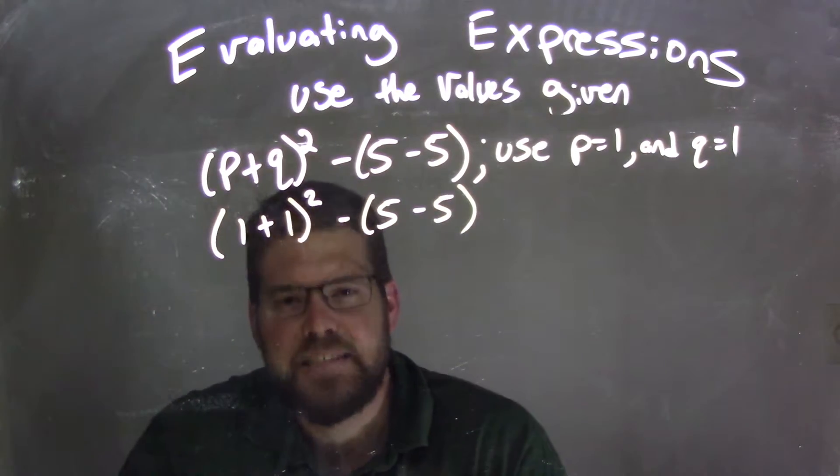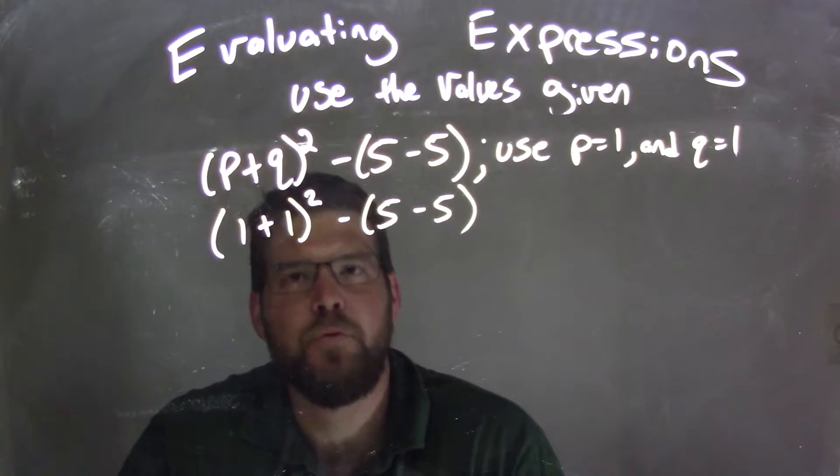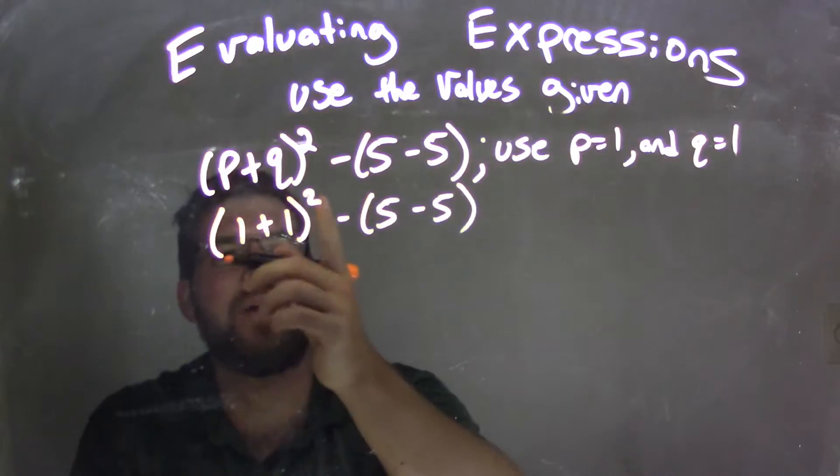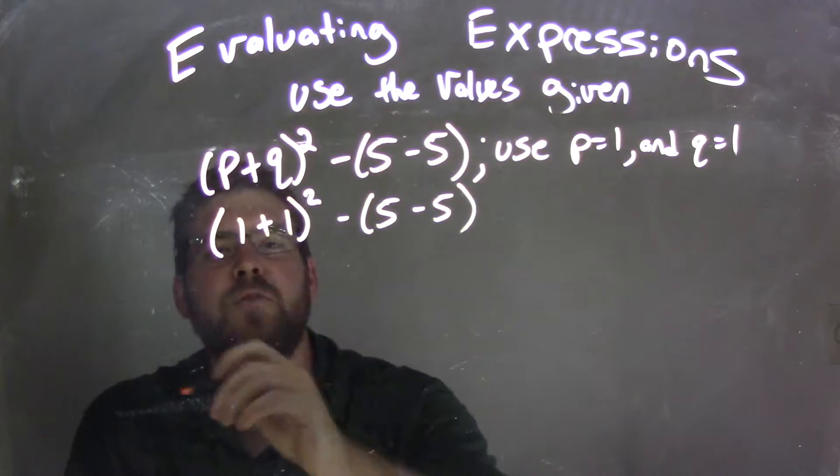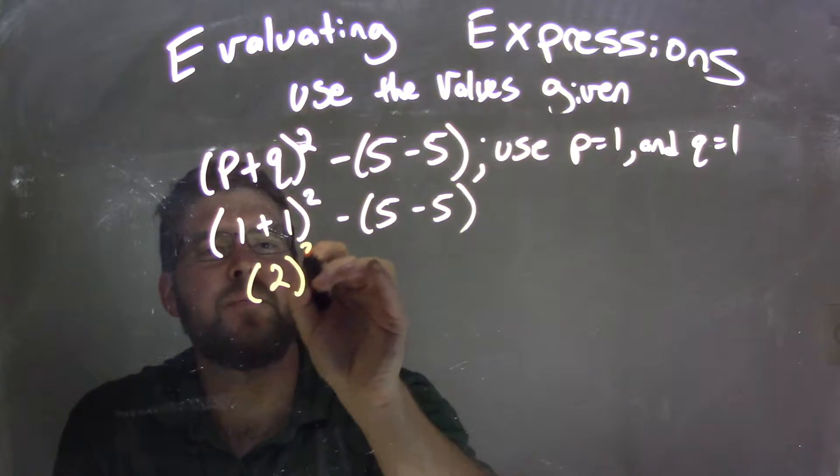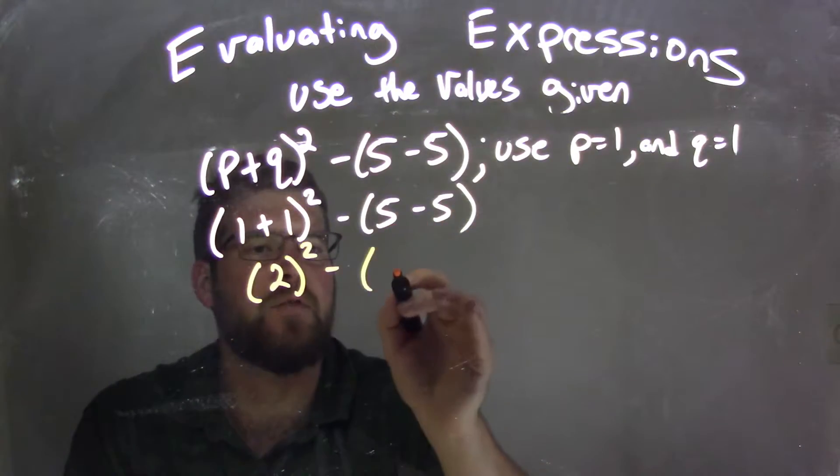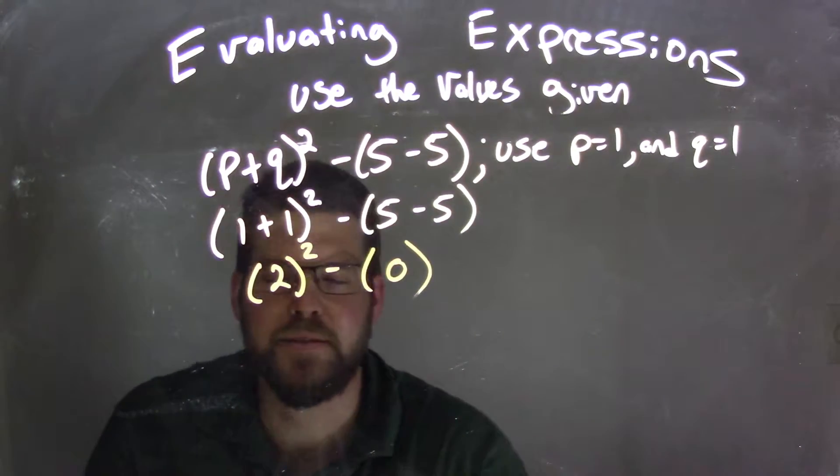Well, 1 plus 1 is inside the parentheses, and parentheses come before exponents. So whatever happened inside the parentheses needs to happen first before we have that exponent. Well, 1 plus 1 is 2, minus, inside this parentheses we can simplify, 5 minus 5 was 0, or is 0.